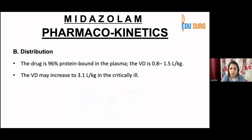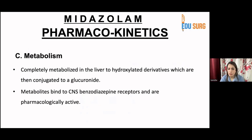Distribution: the drug is 96% protein-bound in plasma. The volume of distribution is 0.8 to 1.5 liters per kilogram, and may increase to 3.1 in the critically ill. It is completely metabolized in the liver to hydroxylated derivatives, which are then conjugated to a glucuronide. These metabolites bind to CNS benzodiazepine receptors and are pharmacologically active.